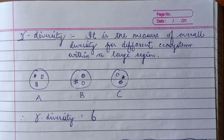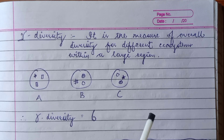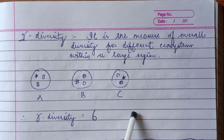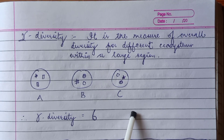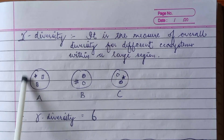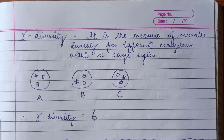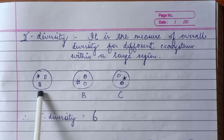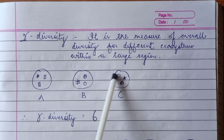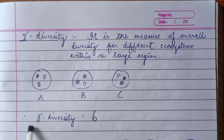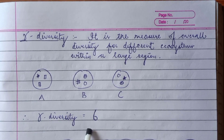Gamma diversity directly tells you about the species richness of a particular large region. Gamma diversity applies when you have a large region containing many ecosystems — not a limited number. So if we have ecosystem A, ecosystem B, and ecosystem C, we look at the total number of unique species across all ecosystems in the large region. Counting: 1, 2, 3, 4, 5, 6 — accounting for repeated species — these are the total unique species happening in the large region.